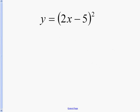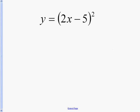Let's look at our first example: y equals (2x minus 5) whole thing squared. We're going to use the u-to-the-n rule, which states that the derivative of u to the n equals n times u to the n minus 1 times the derivative of the inside.